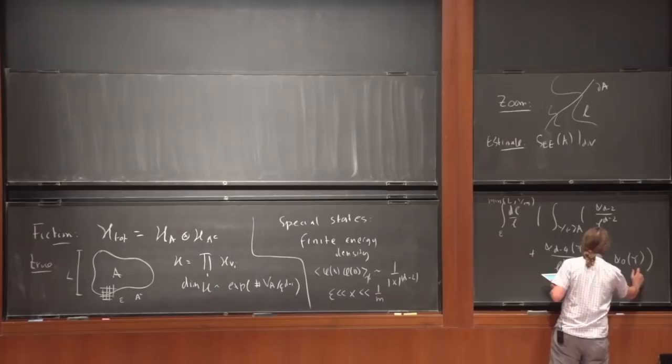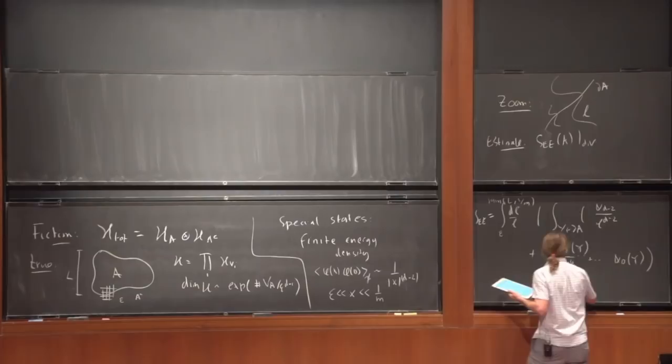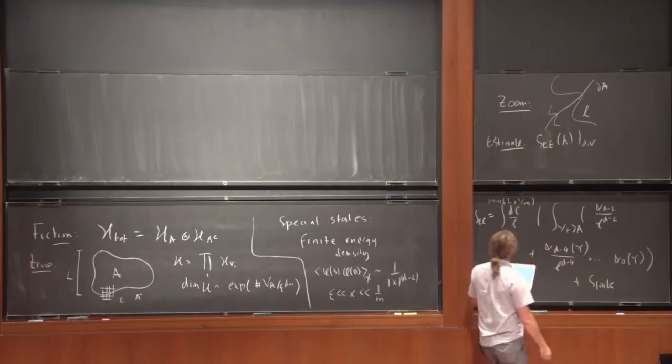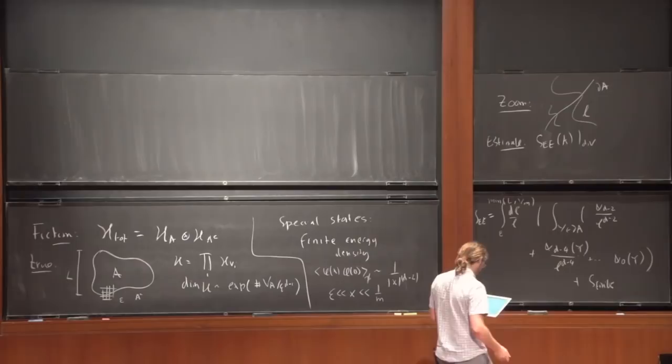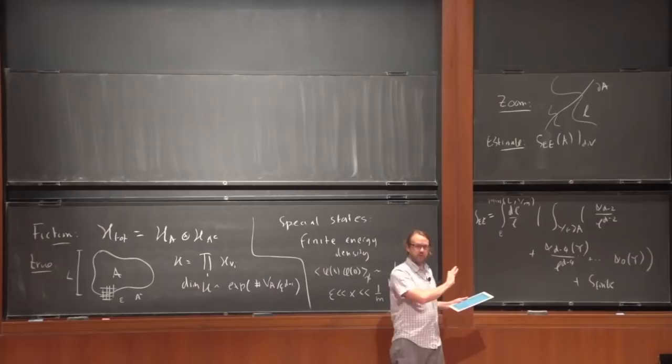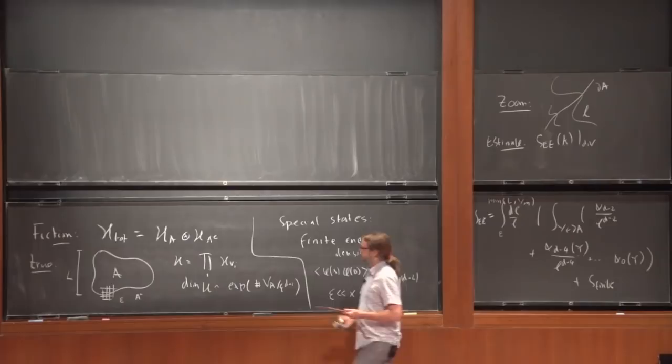So this is the form of the entanglement entropy, and then of course there's a finite piece. A comment: when you integrate dL/L, that gives the log divergence. This is what people usually write down, but there are actually more terms you should be aware of. Although I'll only mention them briefly and then specialize to the geometric terms.